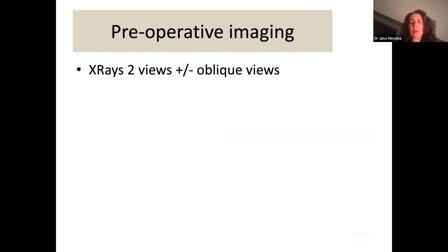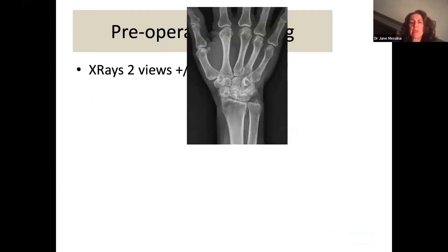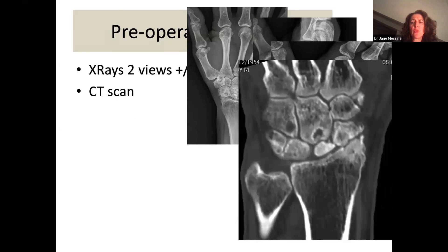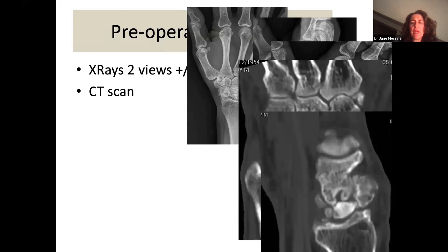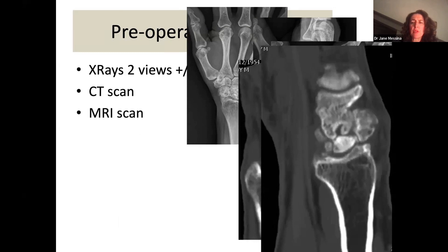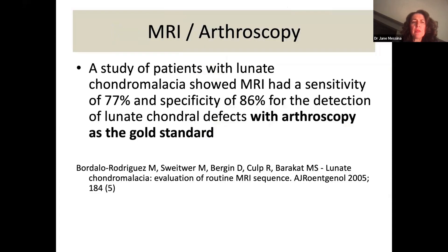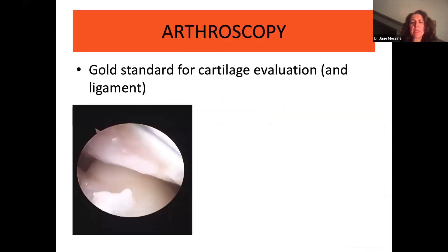Our preoperative imaging protocol includes X-ray in two views plus oblique views. However, you cannot always clearly distinguish bone stock and relationships, so a second-level examination like CT scan is needed to show the relationship between carpal bones, bone stock, and displacements. MRI can also be performed, showing cartilage detail. A study on lunate chondromalacia showed MRI sensitivity of 77% and specificity of 86% for detection of lunate chondral defects, with arthroscopy as the gold standard.